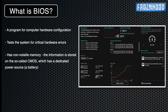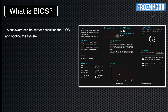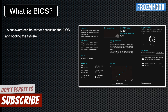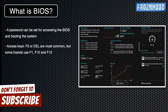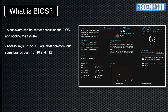If the BIOS test doesn't find any critical errors, it locates the operating system and lets it start loading. If the access is not intentionally restricted by someone, you can enter the BIOS usually by pressing F2 or the Delete key just after you start the PC and before the operating system starts to load.